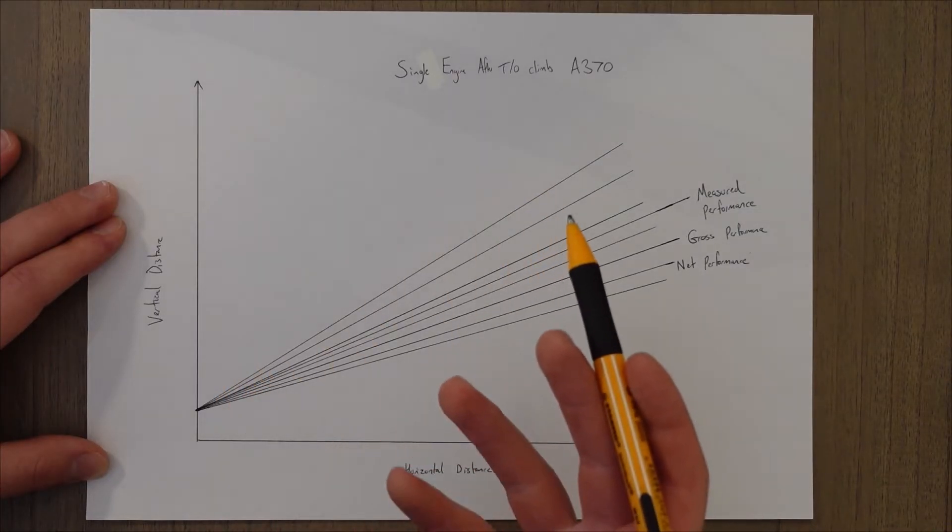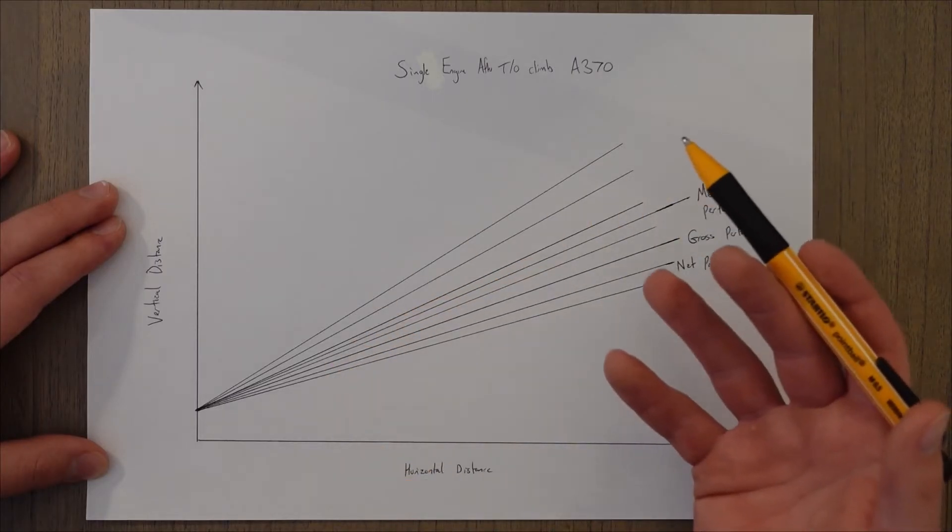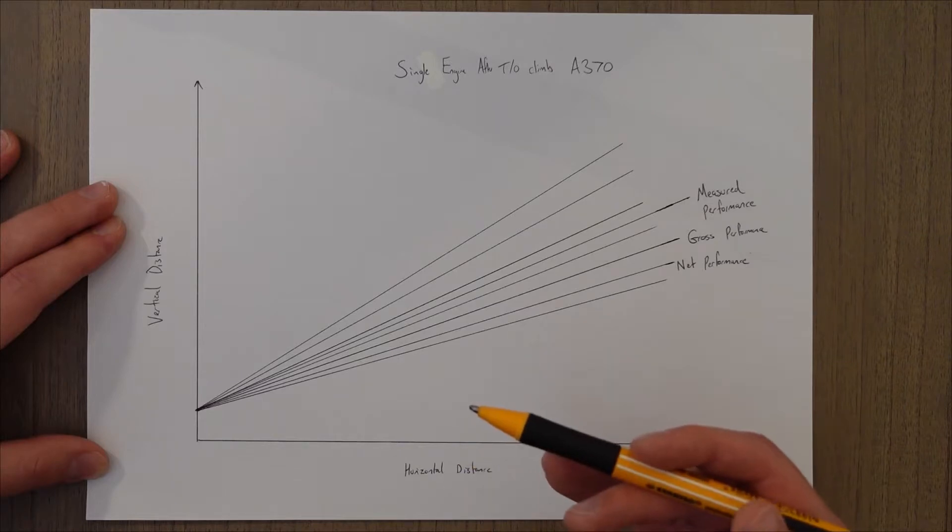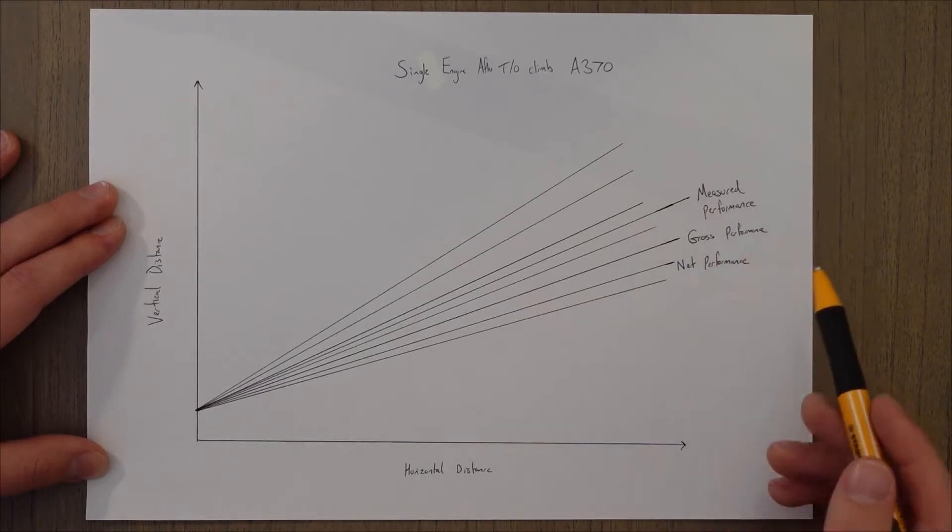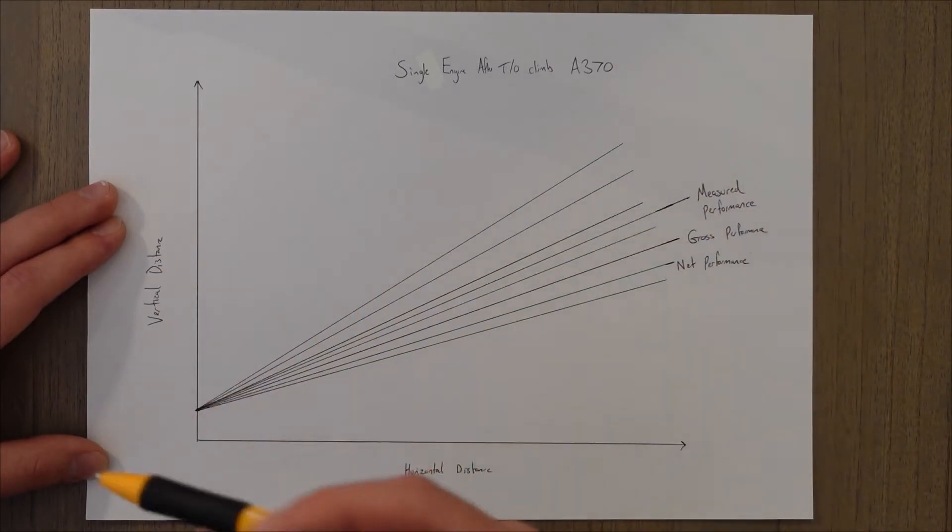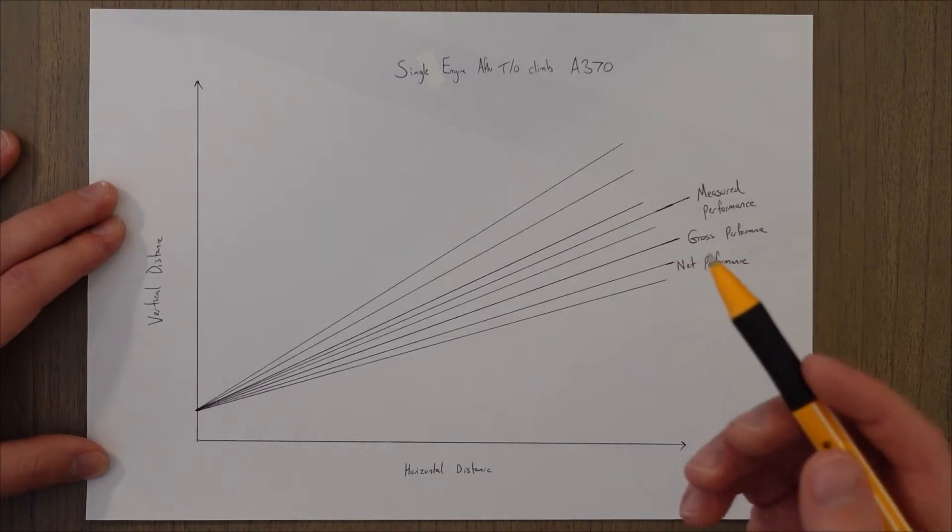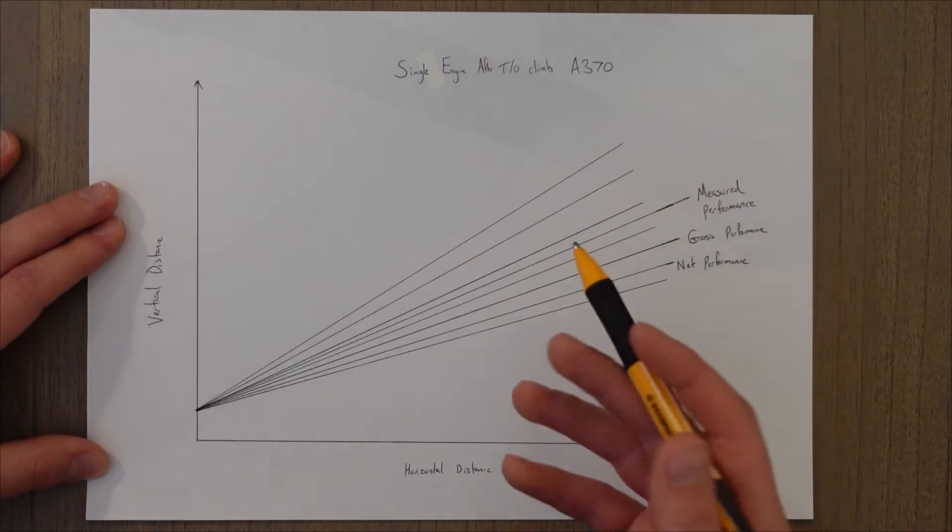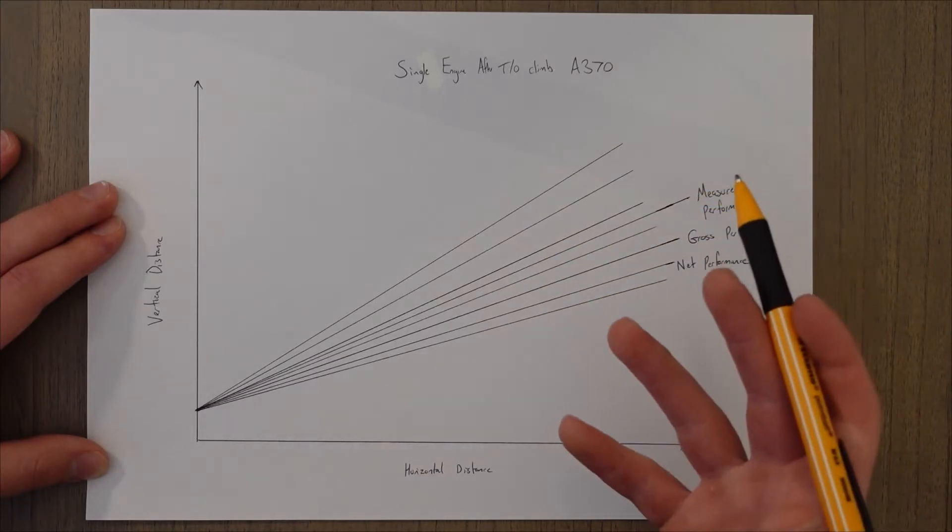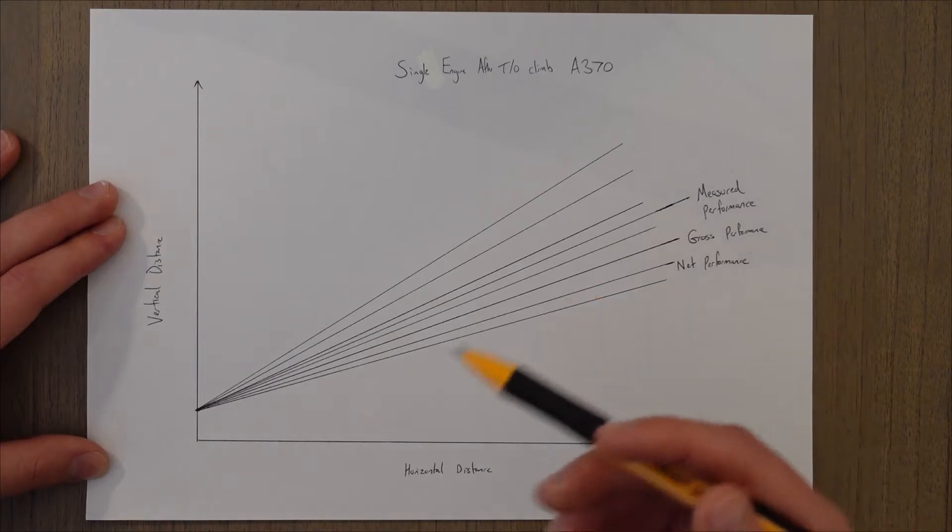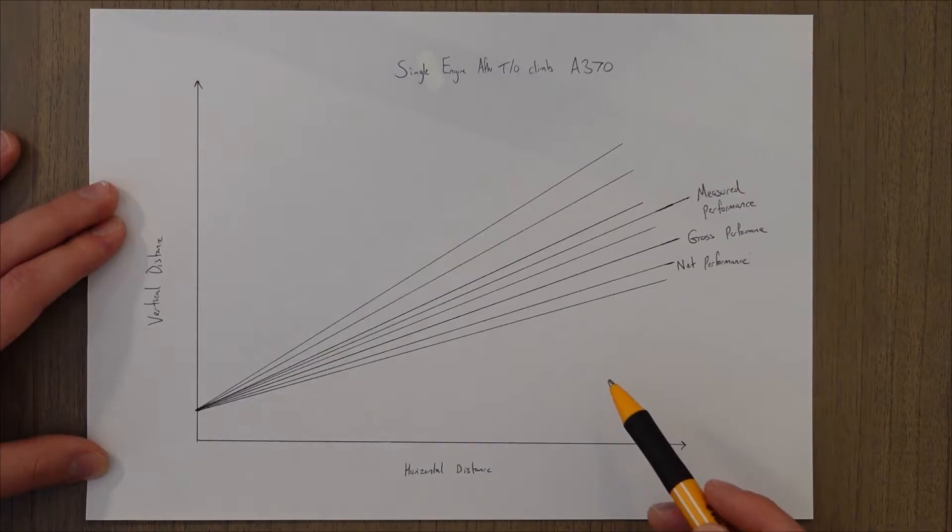We therefore need to find the average performance for the average plane by the average pilot. This is what we call gross performance. This is the average performance achieved by a range or fleet of aircraft by the average pilot. It is useful data as it shows us how the aircraft should perform on average, and it is worse than the measured performance. It means that half the time the A370 will perform better than this, and half the time it will perform a little bit worse than this.